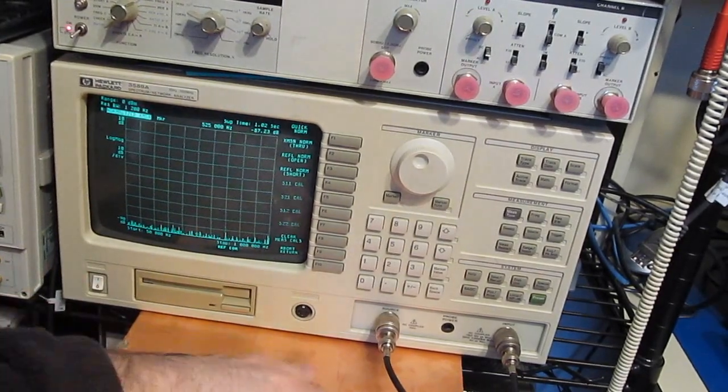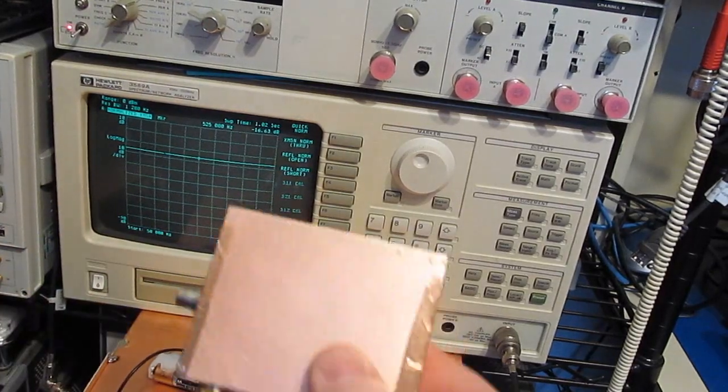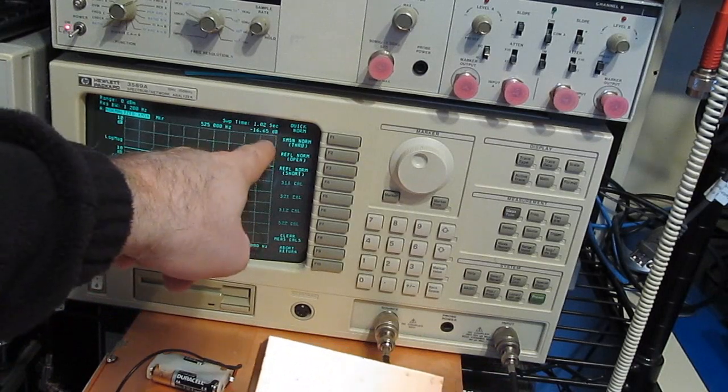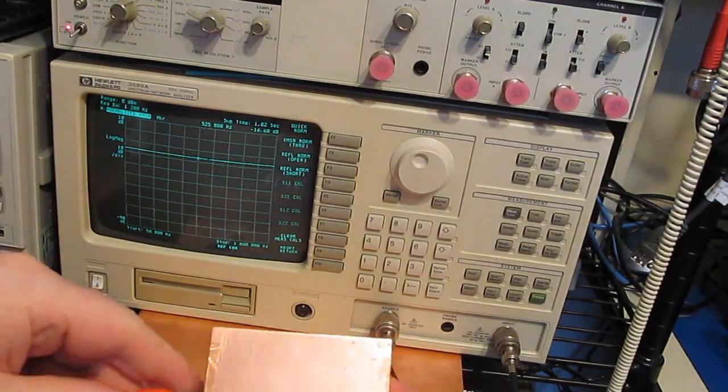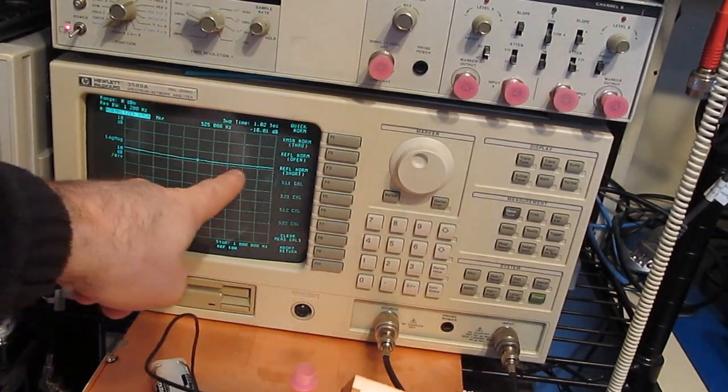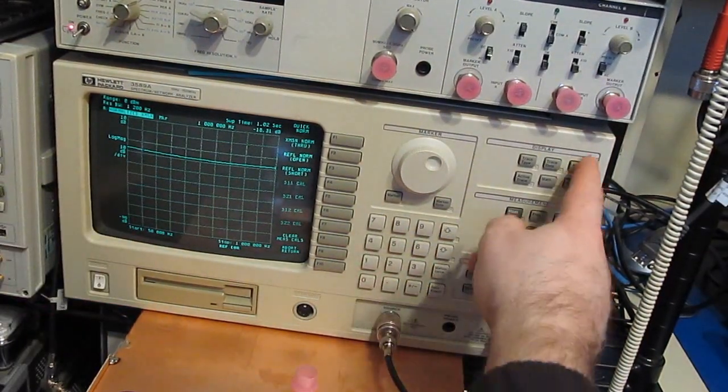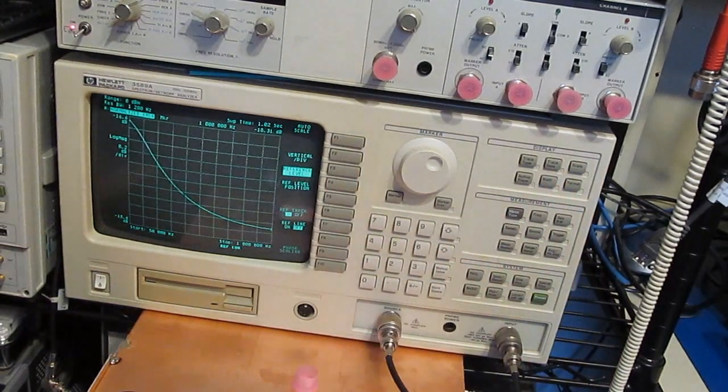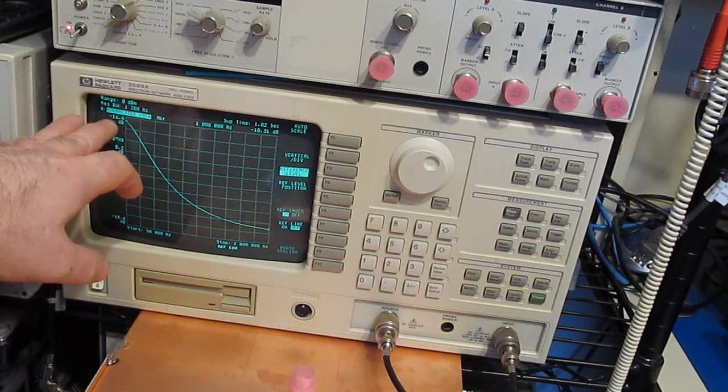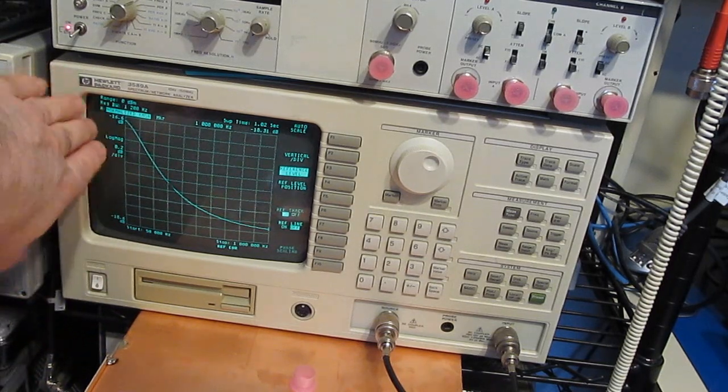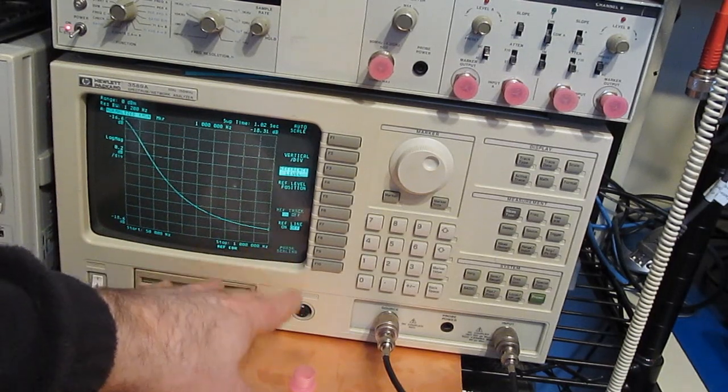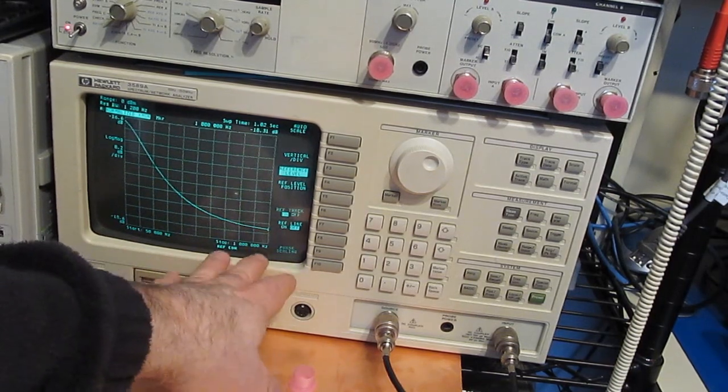Now let's connect our device under test. This is reading roughly 16.6 dB down. Let's power it up. There you go. It's not quite so flat. We can zoom in, hit scale and auto scale. At 50 kilohertz we're starting at roughly 16.6 dB. It's got this nice gradual slope down to roughly 18.31 dB at 1 megahertz.